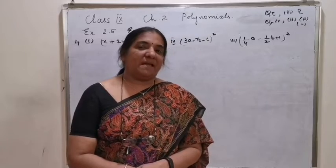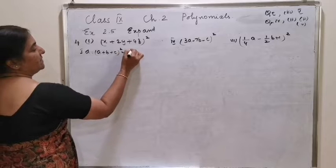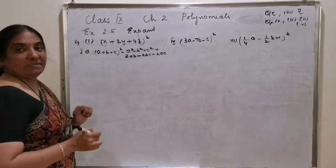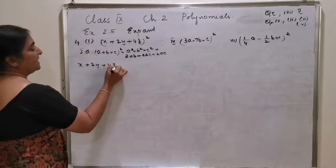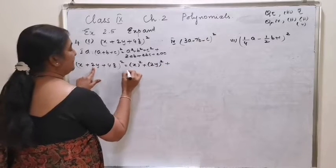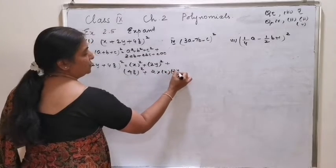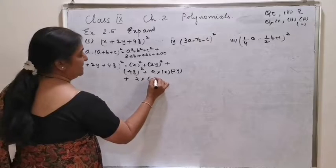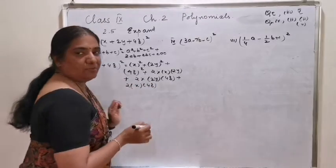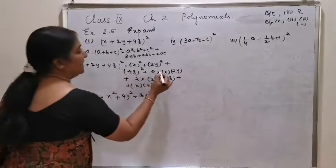Take the value of a, b and c with the sign. The identity is a plus b plus c the whole square equals a square plus b square plus c square plus 2ab plus 2bc plus 2ac. Here all the terms are positive. So x plus 2y plus 4z the whole square equals x square plus 2y the whole square plus 4z the whole square plus 2 into x into 2y plus 2 into 2y into 4z plus 4y square plus 16z square.